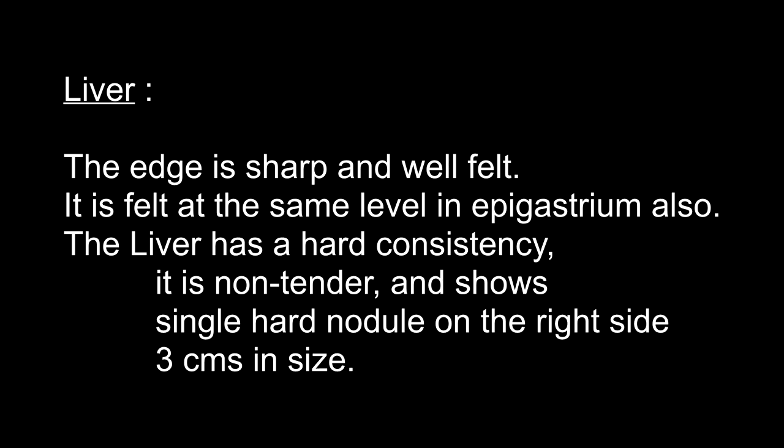Where do you get a smooth hepatomegaly? Congestive cardiac failure, hepatitis, fatty liver, infiltrative disorders like sarcoidosis and amyloidosis, storage disorders, and leukemias and lymphomas. What does the consistency of the liver tell? A hard hepatomegaly is typical of malignancy, either primary hepatoma or secondaries. A firm liver is seen in cirrhosis, congestive cardiac failure, infiltrative and storage disorders. A soft liver is typical of infective hepatitis, fatty infiltration and acute congestive cardiac failure.